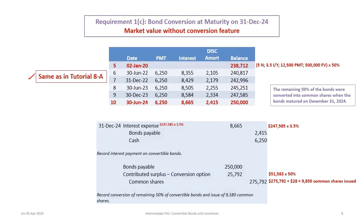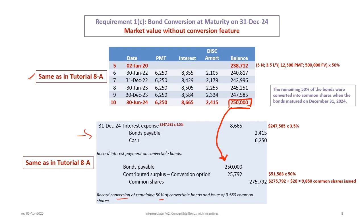After recording the interest update, we record the conversion of the remaining 50% of the bonds. At maturity, the value of the bonds is $250,000, so we debit bonds payable $250,000. The contributed surplus for the bond conversion option is also debited for the remaining $25,792. Common shares are credited for the sum of $275,792 (the $250,000 plus $25,792). The number of shares issued is $275,792 divided by the $28 market price, giving us 9,850 common shares issued.